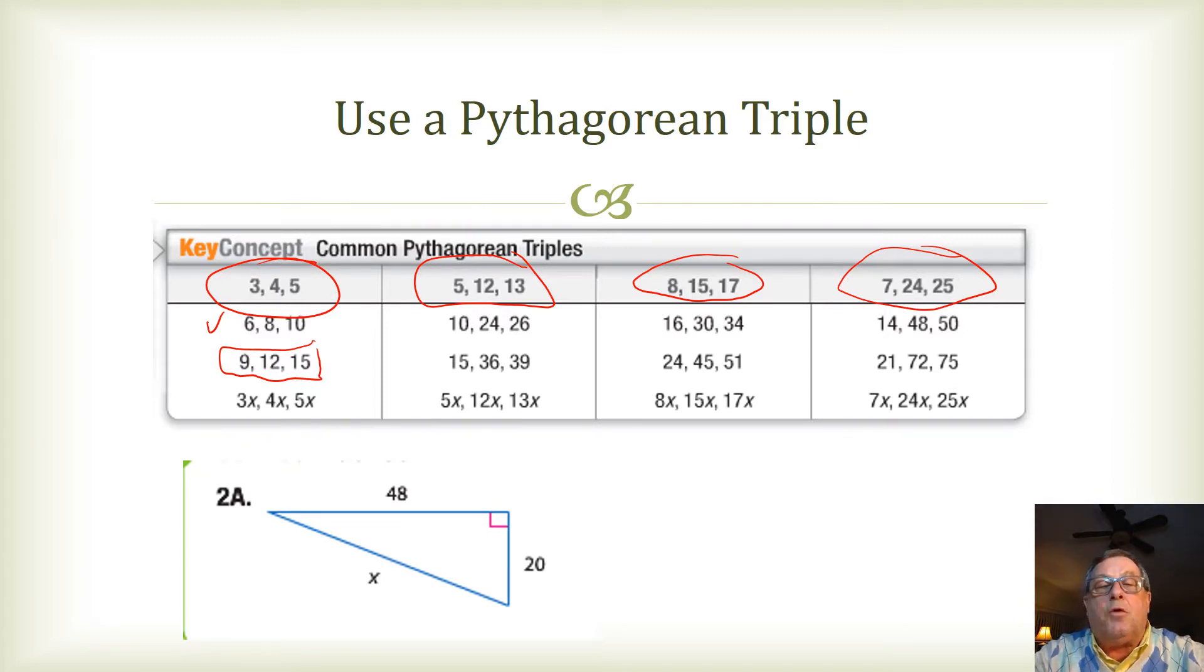But let's just work through this and see how this works. So, I'm looking here at 48 and 20. And 48 and 20 are both divisible by 4. And so, if I divide 48 by 4, then I get 12. And if I divide 20 by 4, well, that equals 5.